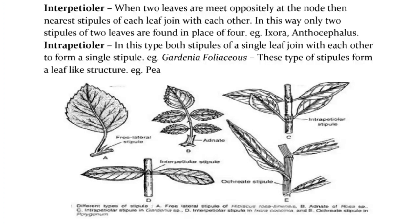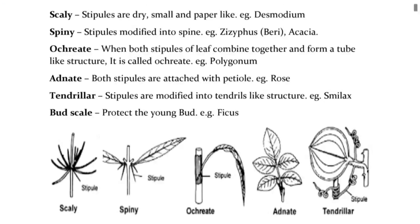Foliaceous stipules form a leaf-like structure, e.g., pea. Scaly stipules are dry, small, and paper-like, e.g., Desmodium. Spiny stipules are modified into spines, e.g., Ziziphus and Acacia. Ochreate — when both stipules of a leaf combine together and form a tube-like structure, it is called ochrea, e.g., Polygonum. Adnate — both stipules are attached with the petiole, e.g., rose. Tendrillar stipules are modified into tendril-like structures, e.g., Smilax. Bud scale stipules protect the young bud, e.g., Ficus.